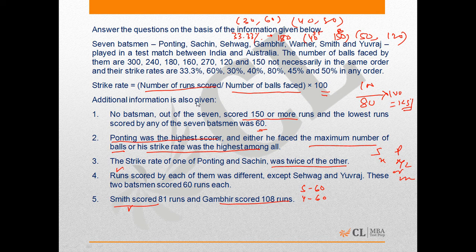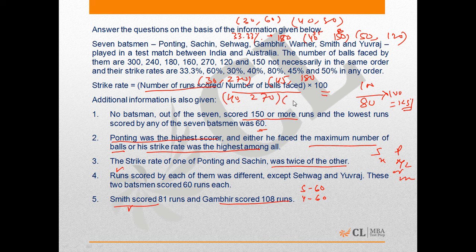For Smith who scored 80 runs, there are two possibilities: strike rate of 30 with 270 balls, or strike rate of 40 with 180 balls. For Gambhir, there are three possible combinations: strike rate of 40 with 270 balls, strike rate of 45 with 240 balls, or strike rate of 60 with 180 balls.